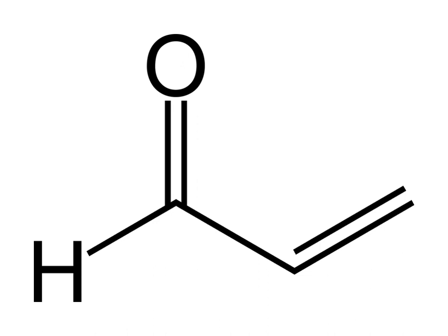Ropiness is manifested as an increase in viscosity and a slimy or fatty mouthfeel of a wine. In France the fault is known as graisse, which translates to fat. The problem stems from the production of dextrins and polysaccharides by certain lactic acid bacteria, particularly of the genera Leuconostoc and Pediococcus.